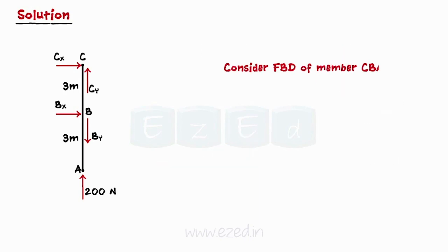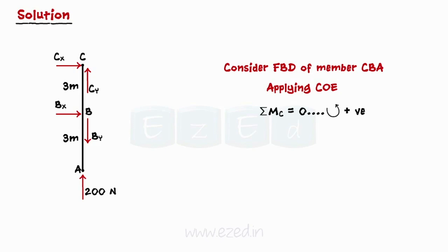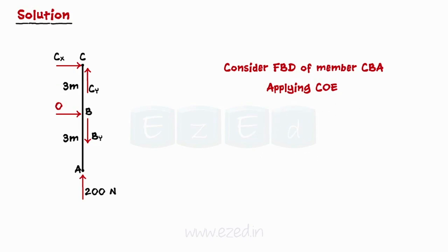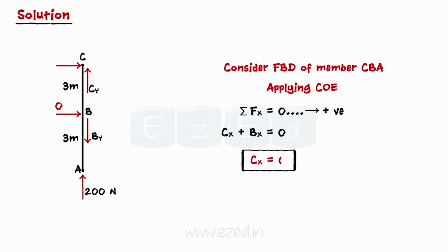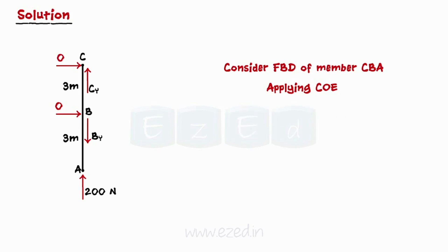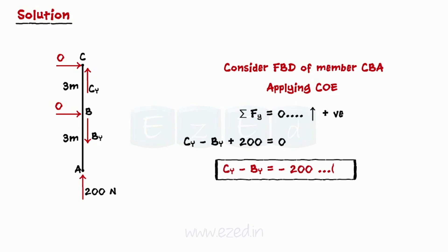Consider the FBD of member CBA. We will apply conditions of equilibrium to member CBA. First, equating the summation of moments of all forces about point C to zero, we get the x component of pin reaction at B as zero. Then, equating summation of forces in the x direction to zero, we get the x component of pin reaction at C as zero. Equating forces in the y direction to zero gives us an equation — say equation one — which relates the y components of pin reaction at B and C.